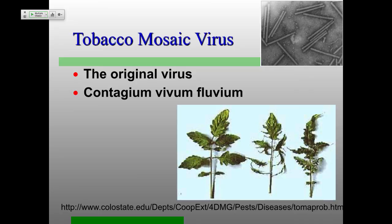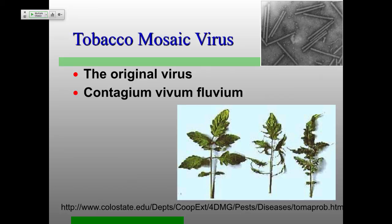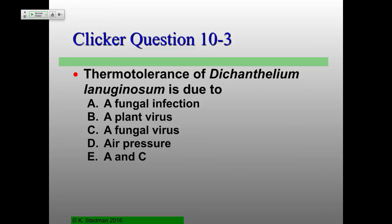Finishing up by going way back in time — tobacco mosaic virus. This was the contagium vivum fluidum, the disease-causing agent that went through filters that bacteria couldn't pass. Here's a tomato plant infected by tobacco mosaic virus — again, the names of these viruses don't necessarily correspond to all their hosts. Here's the helical RNA virus structure — we all remember that one from the midterm. Last clicker question: what is the thermotolerance of Dichanthelium lanuginosum due to — fungal infection, plant virus, fungal virus, air pressure, or A and C?